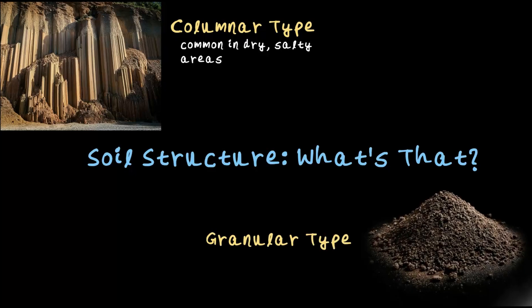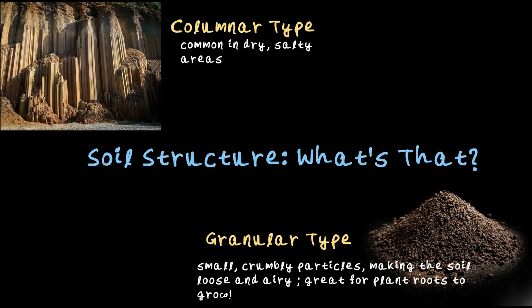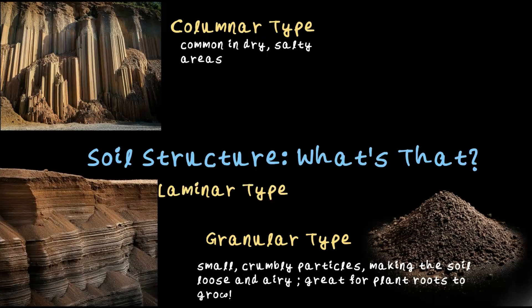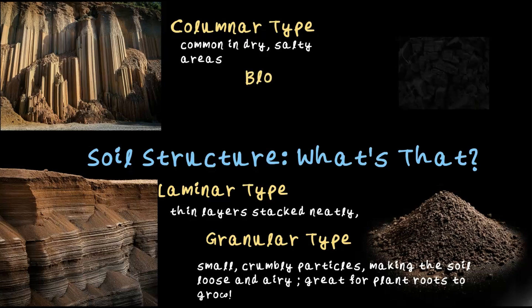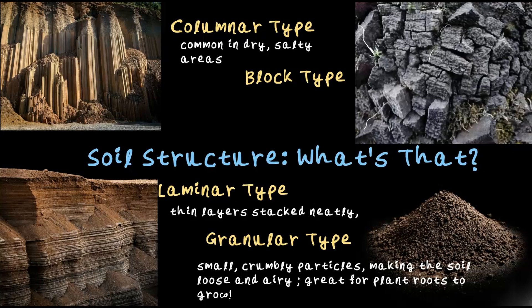Next up, we have granular structure. These are small crumbly particles that make the soil loose and airy, perfect for roots to spread out and grow. Then there is laminar type — thin stacked layers of soil on top of one another, like biscuits stacked one on top of another. And the next type is block type, where chunky blocks of soil look firm but actually allow water and air to pass through them easily, which can be worked on for healthy plant growth. These are the different types of soil structure, and the shape of these particles has a big impact on how plants grow and how soil handles water and air.